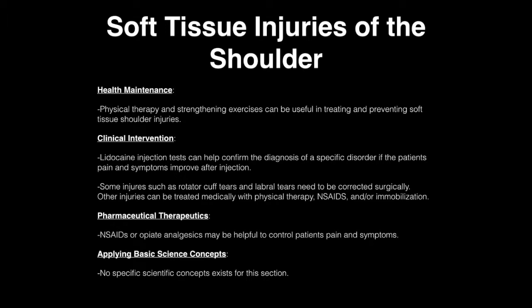Physical therapy and strengthening exercises can be useful in treating and preventing soft tissue shoulder injuries. Lidocaine injection tests help confirm the diagnosis of a specific shoulder disorder if the patient's pain and symptoms improve after injection. Some shoulder injuries, such as rotator cuff tears and labral tears, need to be corrected surgically. Other injuries can be treated medically with physical therapy, NSAIDs, or immobilization. NSAIDs and opiate analgesics can be helpful to control the patient's symptoms.